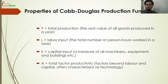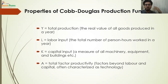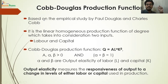Y equals total production — it is the real value of all goods and services produced in a particular year. L is labor input, estimated in person-hours worked in that year. K is capital input, considering all machinery, equipment, buildings, etc. A is known as the total factor productivity — anything beyond labor and capital, often considered as technology. In the Cobb-Douglas function Q equals A times L to the power alpha times K to the power beta, this A remains fixed.